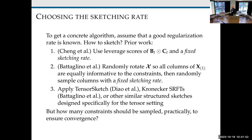The key point is that the sketching rate needs to change over time. We're going to assume we have a good proximal regularization rate — that's a separate question. The question is how do we sketch? Prior work suggests a bunch of different approaches that all work well with this meta-algorithm. But the question is: how many constraints should be sampled practically at each iteration?